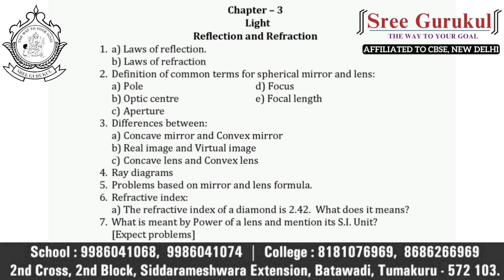In this chapter, we can expect differences also: differences between concave mirror and convex mirror, real image and virtual image, concave lens and convex lens — among these three, you can expect any one. Next, a very important concept: in this chapter, 100% you can expect questions from ray diagrams, which may be in a lens or in a mirror. Next, problems based on mirror and lens — 100% you can expect problems based on mirror formula or lens formula. Next concept is refractive index. For example, the refractive index of a diamond is 2.42 — what does it mean?